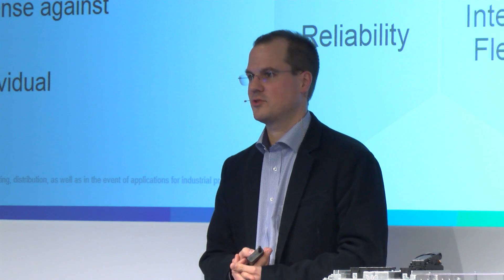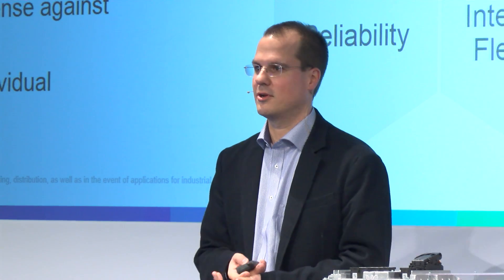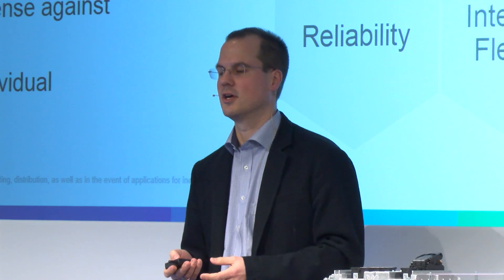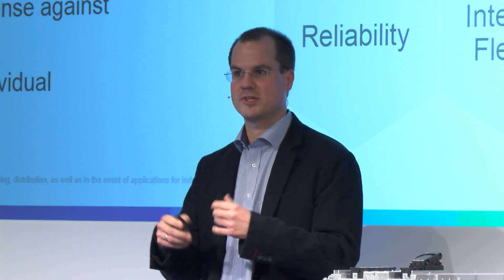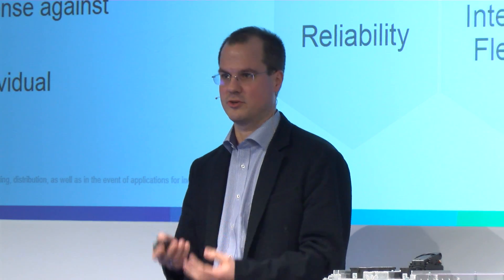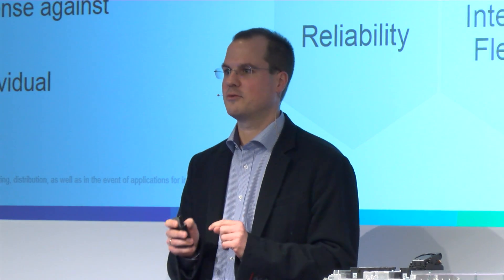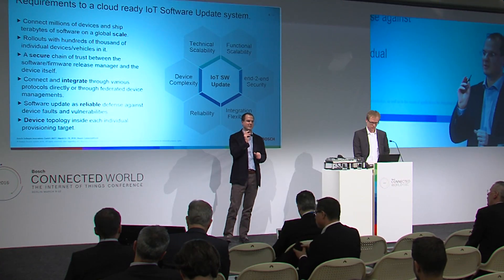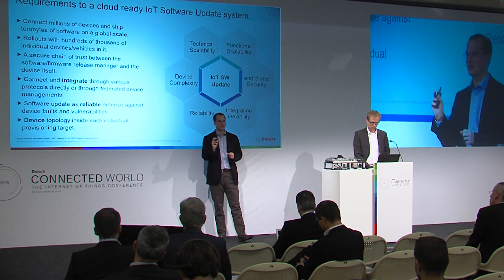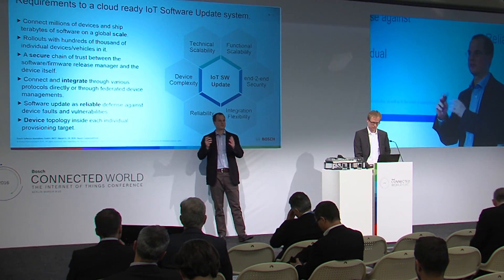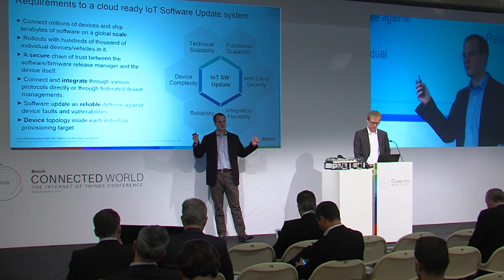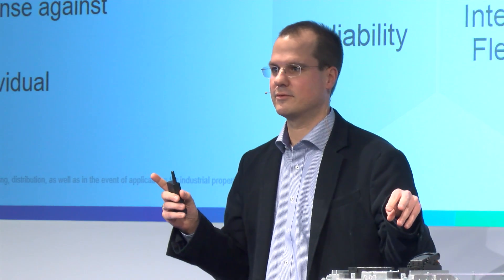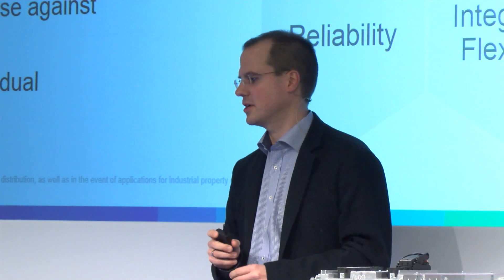Another very important point is end-to-end security. We already heard about the different layers of security typically found in IoT and IT in general. You want encryption, authentication, and authorization — but you want even more. You want a device to trust the software it receives, to be able to prove that the software has been signed by the person, process, or system that was valid to do so. You want end-to-end security from the point where the software was created all the way down to the device itself.